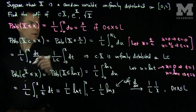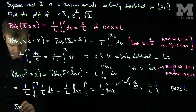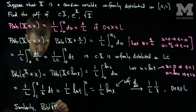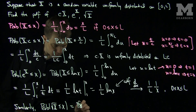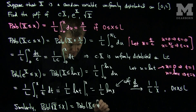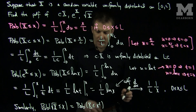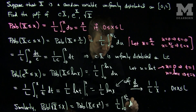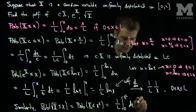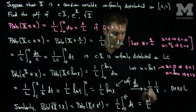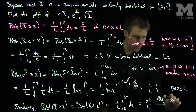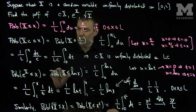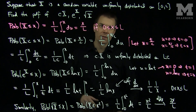We can do the same thing with the square root of X. The probability that √X is less than or equal to x equals the probability that X is less than x squared. Writing this as 1 over L times the integral from 0 to x squared of dt, as long as x is between 0 and √L, and integrating gives x squared over L. Differentiating, we get 2x over L. To summarize: to find the PDF of a new random variable, use the inverse function of the transformation applied to the random variable, then differentiate the CDF to find the PDF.